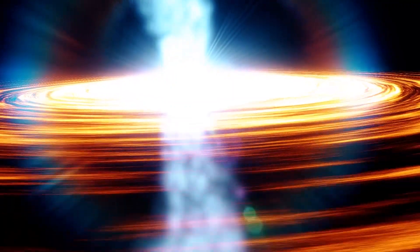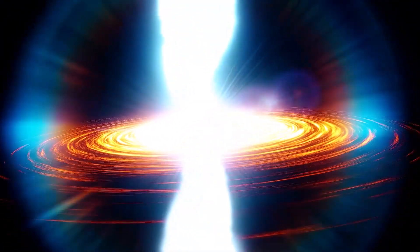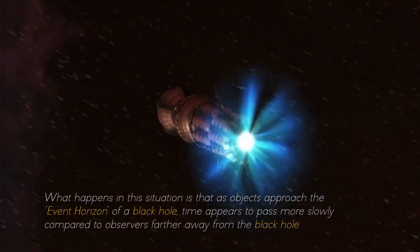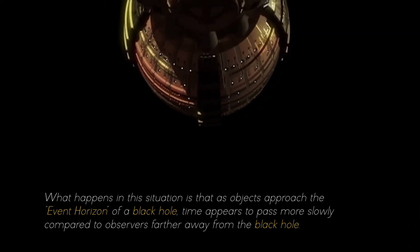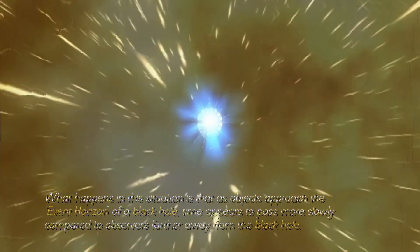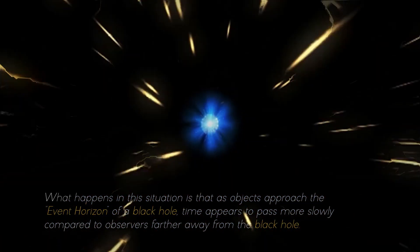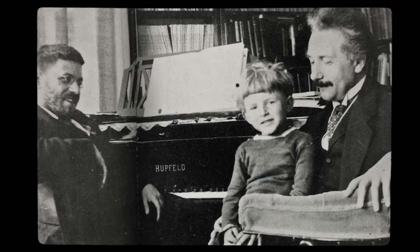But most surprising of all, the extreme gravitational attraction near a black hole gives rise to a phenomenon known as time dilation. What happens in this situation is that, as objects approach the event horizon of a black hole, time appears to pass more slowly compared to observers farther away from the black hole. This phenomenon, predicted by Einstein's theory of relativity, is due to the warping of space-time caused by the intense mass of the black hole.